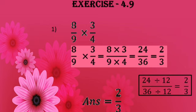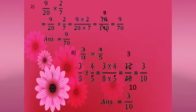Let us go on to exercise 4.9. First sum: 8 by 9 into 3 by 4. Multiply the numerators and denominators first, then find the lowest term. 8 into 3 by 9 into 4 equals 24 by 36. The common factor between 24 and 36 is 12. Dividing both by 12 gives 2 by 3 as the answer.